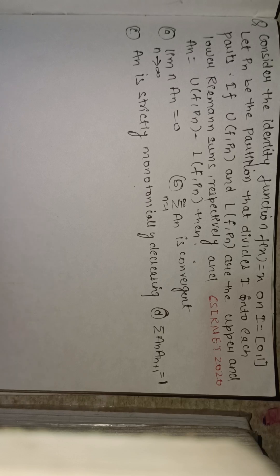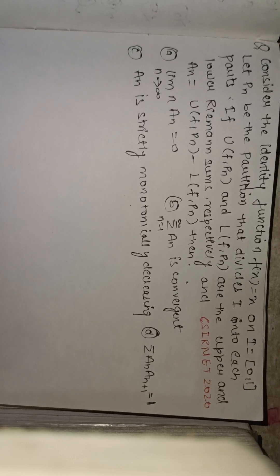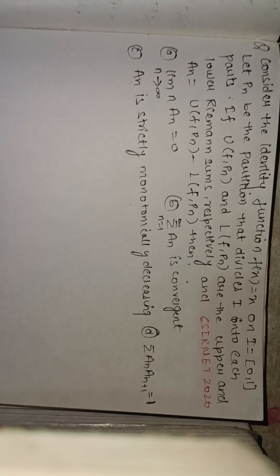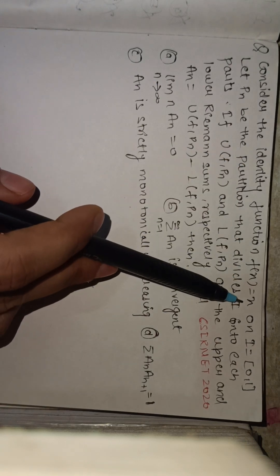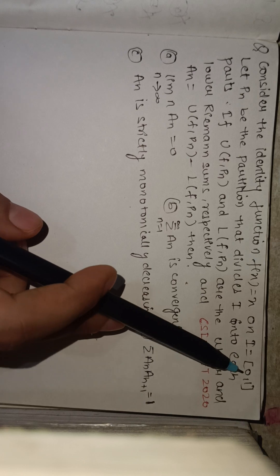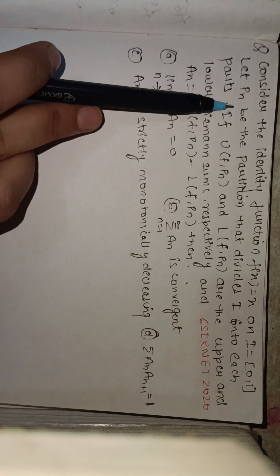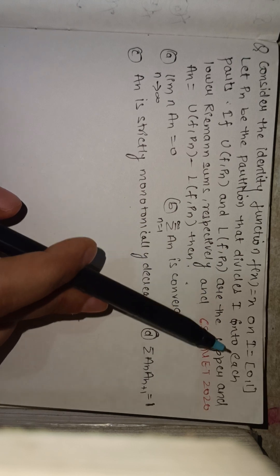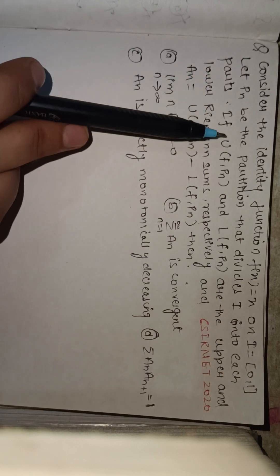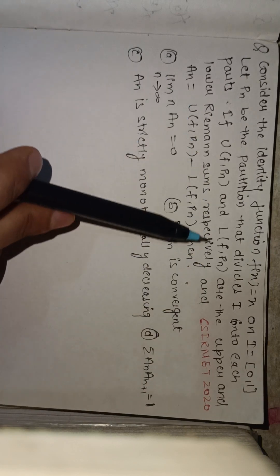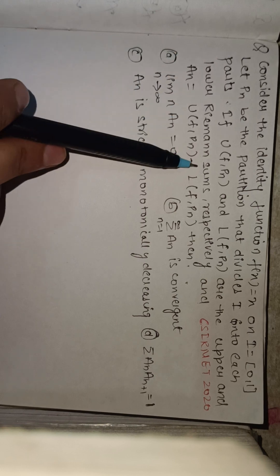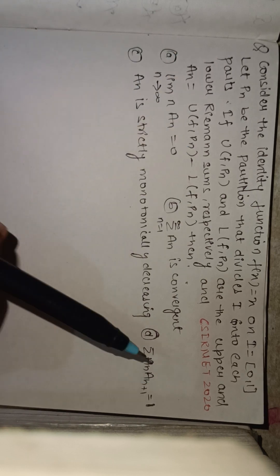Hello everyone, welcome to our channel Higher Mathematics. In this video lecture I am going to discuss the next PYQ of real analysis asked in CSIR NET 2020. Our question considers the identity function f(x) = x on interval I = [0, 1]. Let Pn be a partition that divides I into n equal parts. If U(f,Pn) and L(f,Pn) are the upper and lower Riemann sums respectively, and An = U(f,Pn) - L(f,Pn), then which of the following are correct?